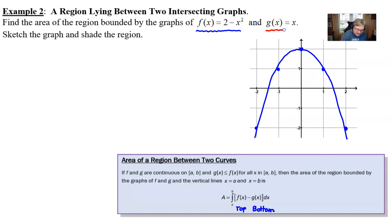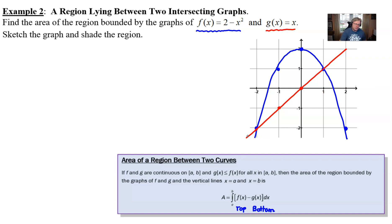Now graphing g(x) = x is a lot easier — it's a straight line through the origin where y and x are the same, giving it a slope of 1. And lo and behold, you have a closed region. If you were a rancher putting cattle in this region, they certainly wouldn't run away because they're bounded by fences on all sides.